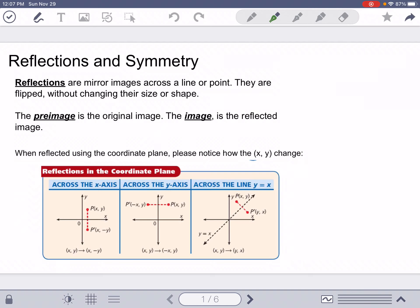Alright, reflections and symmetry. Reflections are mirror images across a line or point. They are flipped without changing their size or shape.